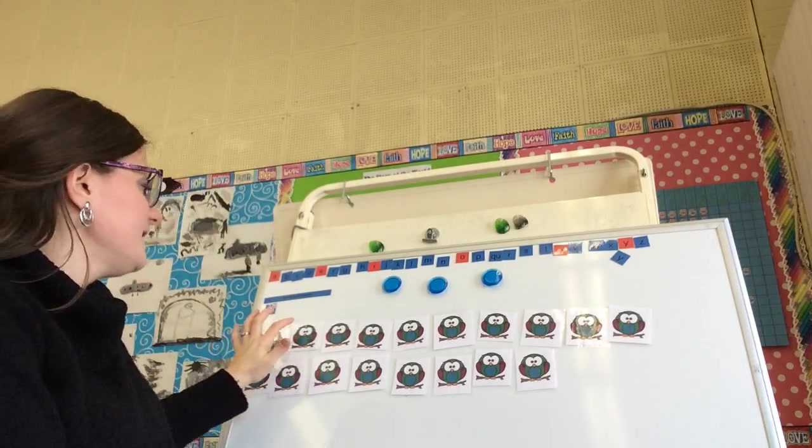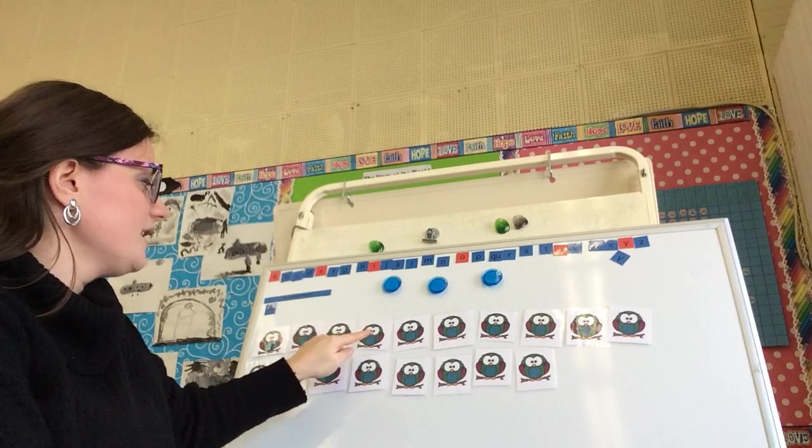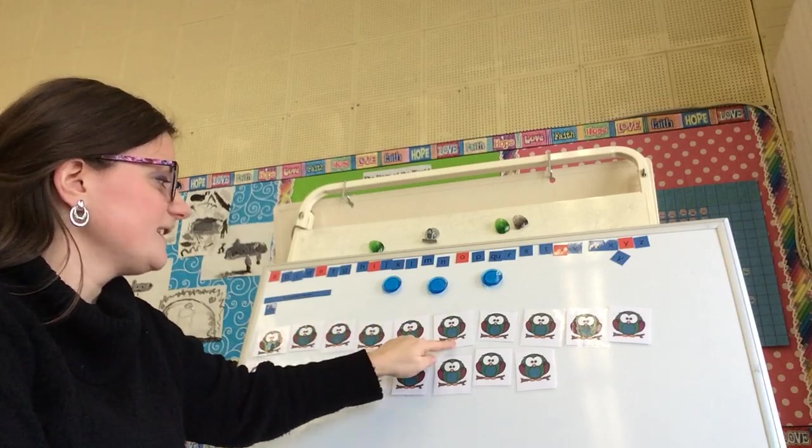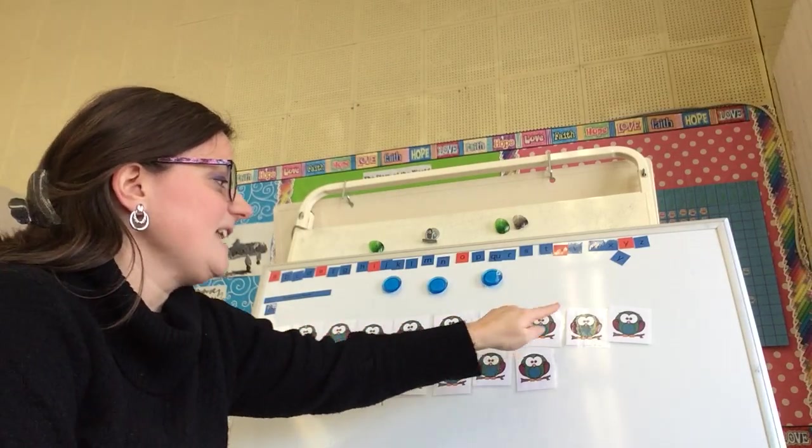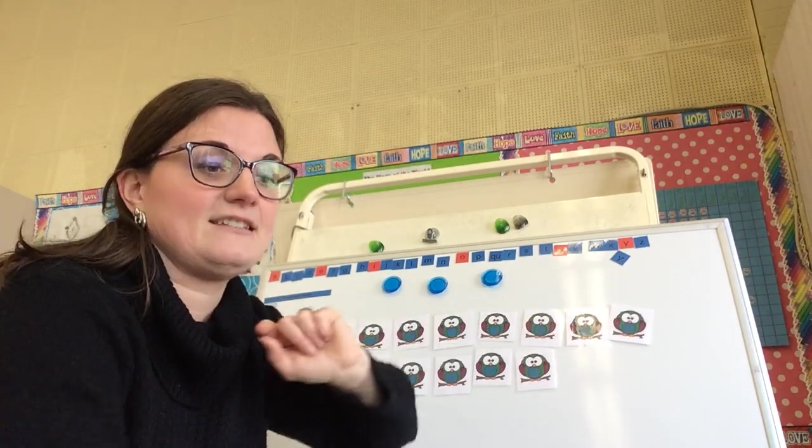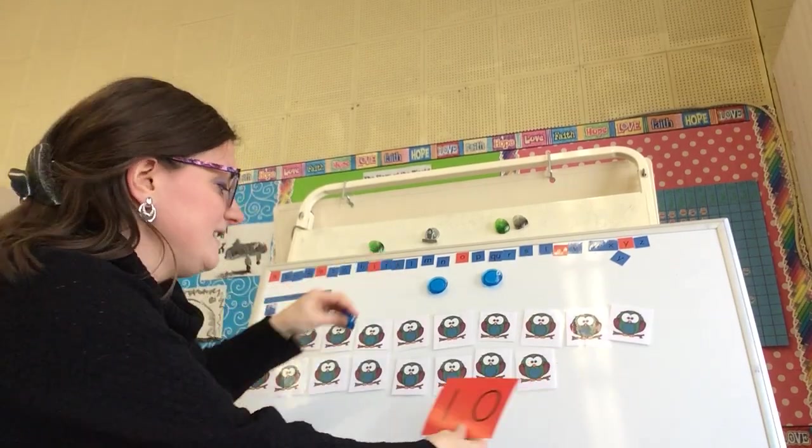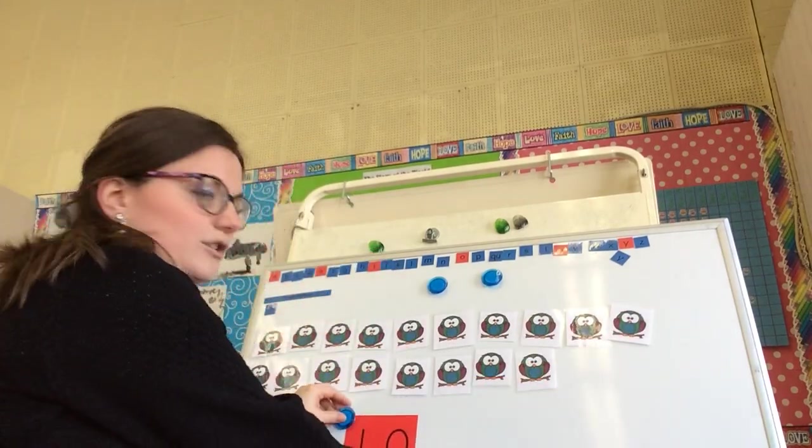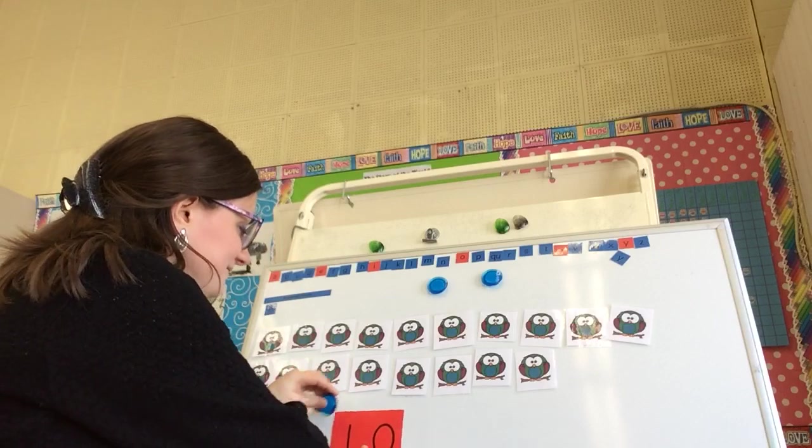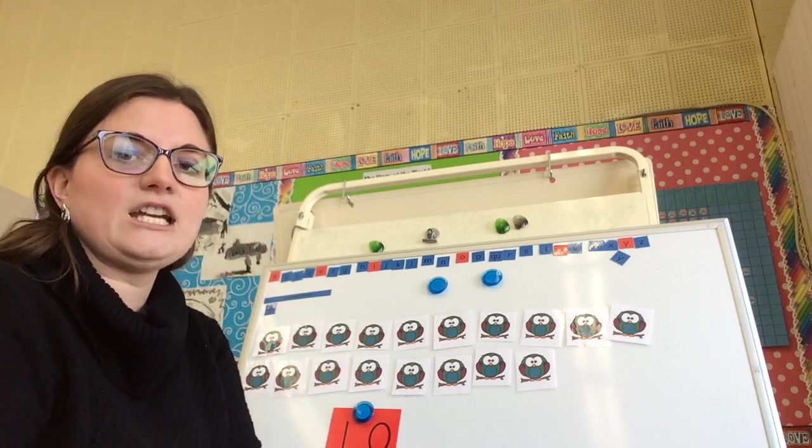Say it out loud with me. 1, 2, 3, 4, 5, 6, 7, 8, 9, 10. So we have 10 in our first row.